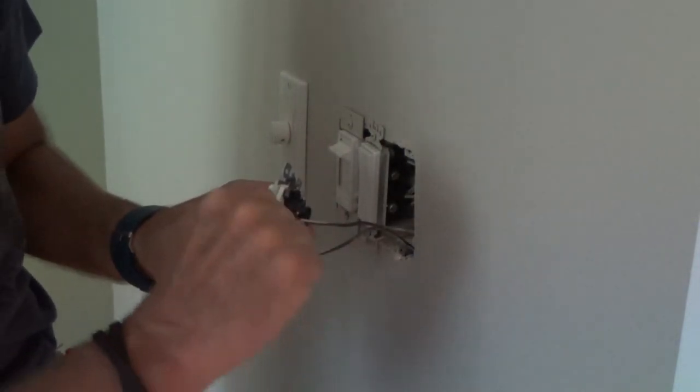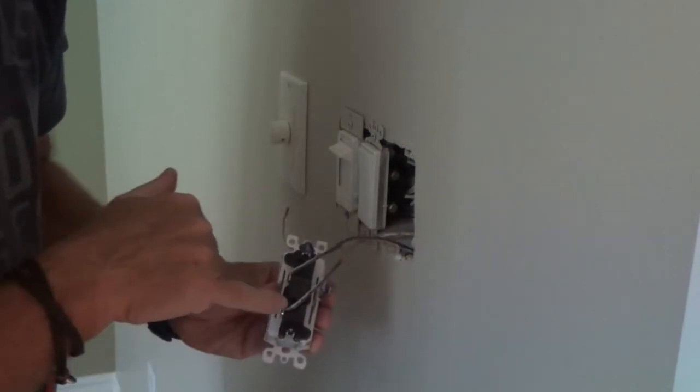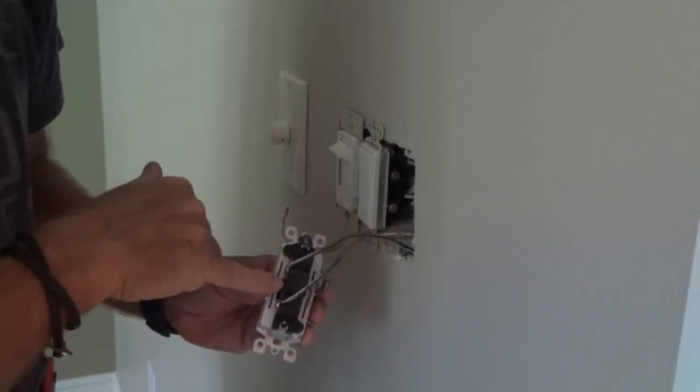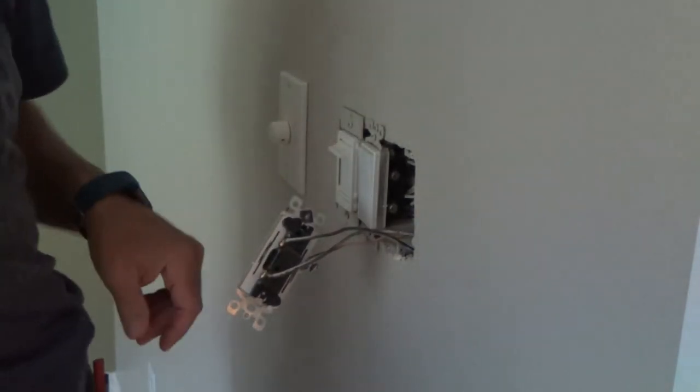This time they have them looped around the screws. Remember on another light switch that I took out, there were holes in the back. And this one, in fact, has holes in the back and they chose not to use those. Different electricians like to do it different ways.